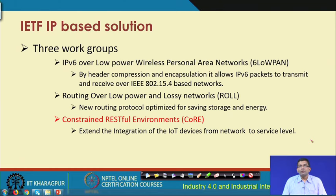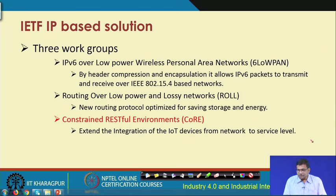We have different IP-based solutions following different IETF initiatives - 6LoWPAN, RPL, and CoRE are three important ones. 6LoWPAN talks about how you can do header compression and encapsulation to allow IPv6 packets from the network layer to be transmitted over IEEE 802.15.4 based networks. RPL is about how you can optimize the routing protocol for saving on storage and energy - it is a new kind of routing protocol for IoT-based applications. CoRE - Constrained RESTful Environments - extends the integration of IoT devices from networks to the service level.